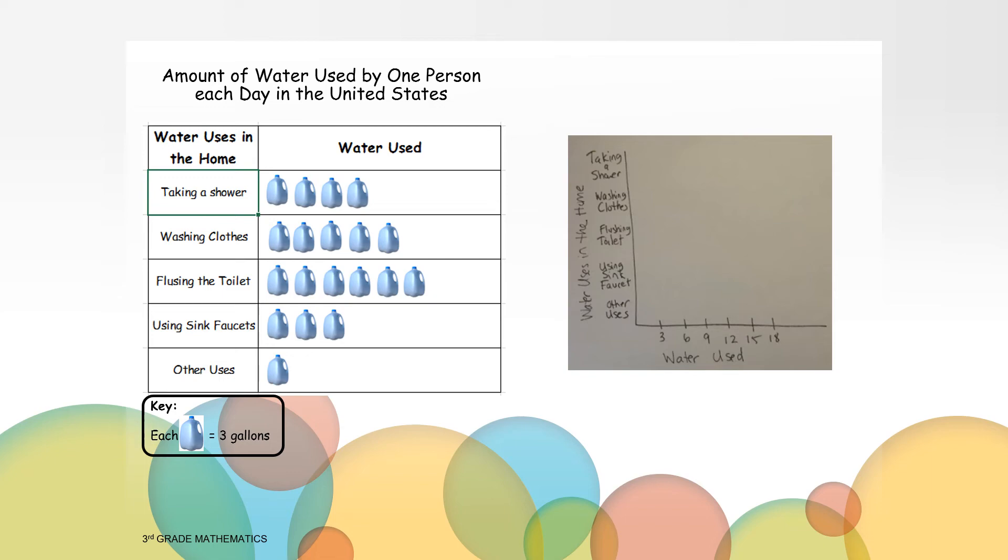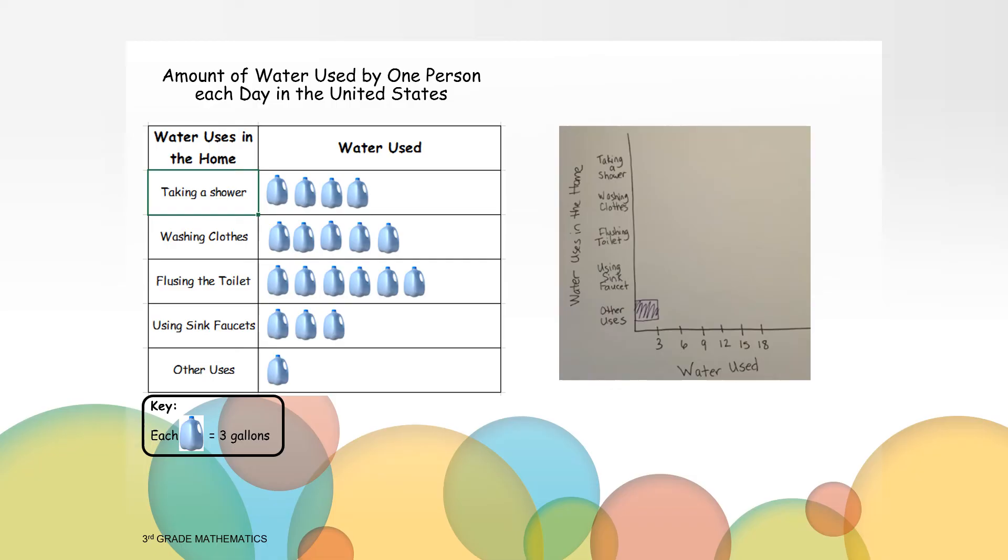Your five bars can all be one color, or you can make them five different colors. Also, your bars should not touch each other. Make sure there's a little space between all of the bars. This is what the bar looks like for other uses. Other uses is equal to 3 gallons of water. So my bar stops at 3.